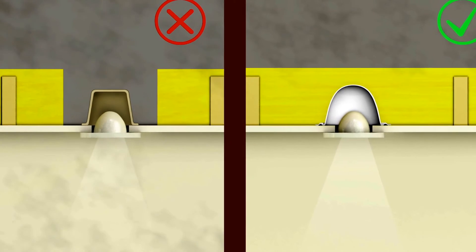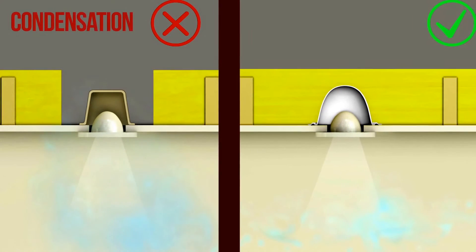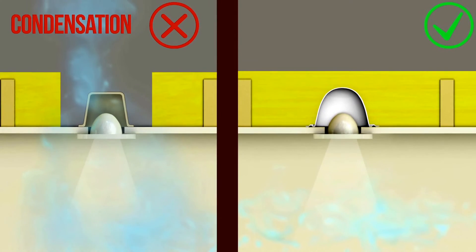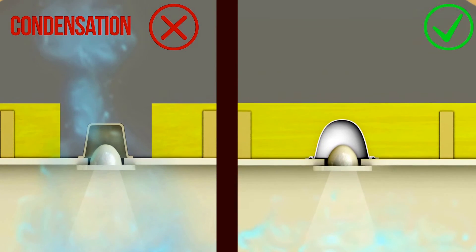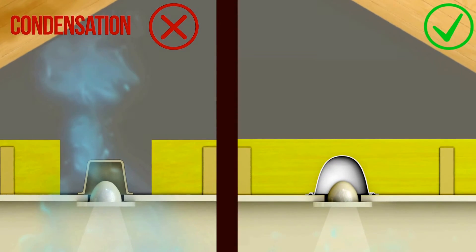It also protects from water vapor transmission into cold attic voids, which often leads to long-term problems like rotting timber.